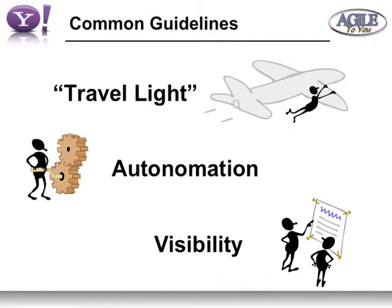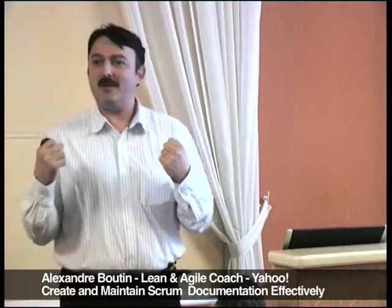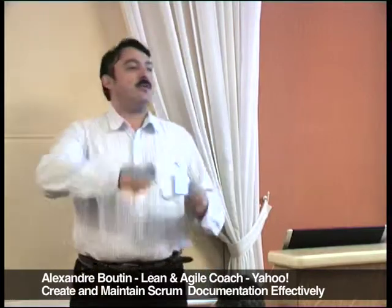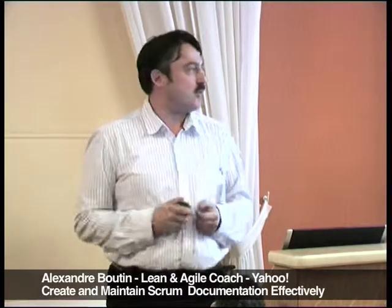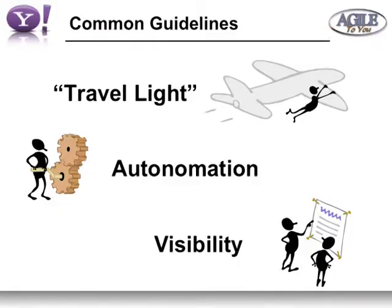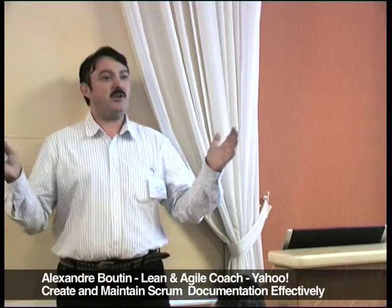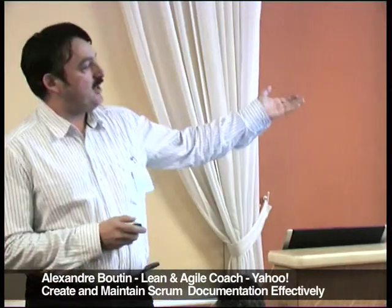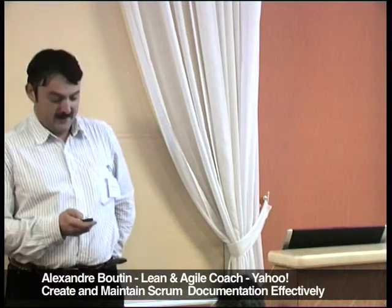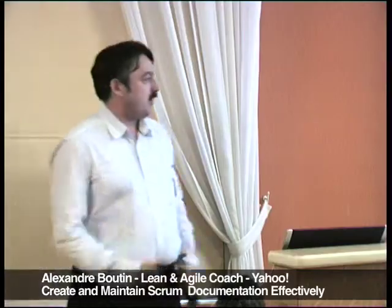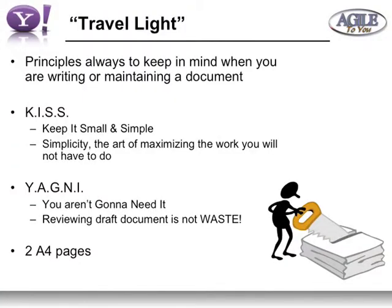Three guidelines. First: travel light. When you take a plane, you try to bring only a small bag — you don't want to check luggage or wait. Documentation can work the same way. I use this word from lean; I really love the lean approach, even more than agile, but we also use agile for projects. The second area is automation with a human touch, and of course visibility, which is definitely an agile principle.